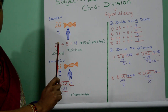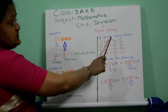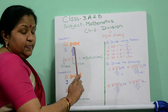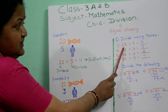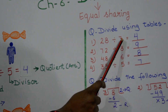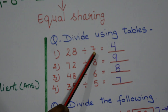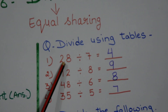Now let's start doing some sums using tables only. Like 28 divided by 7 — read the table of 7 until the answer comes to 28.